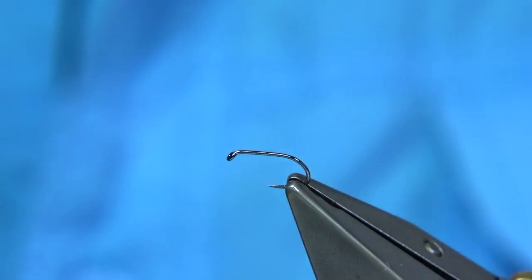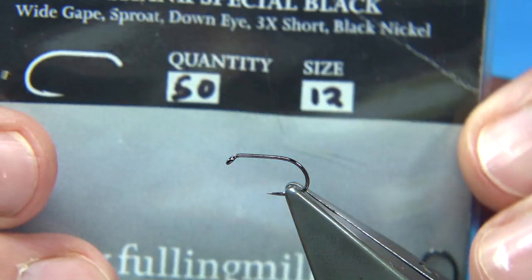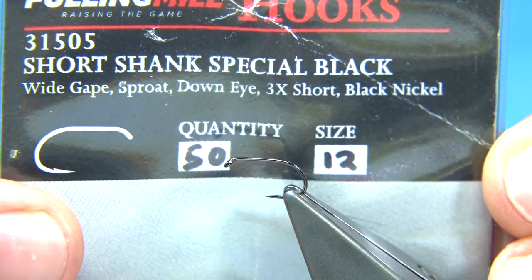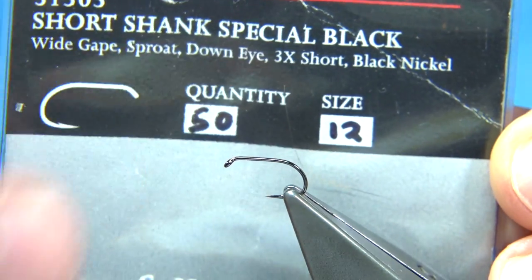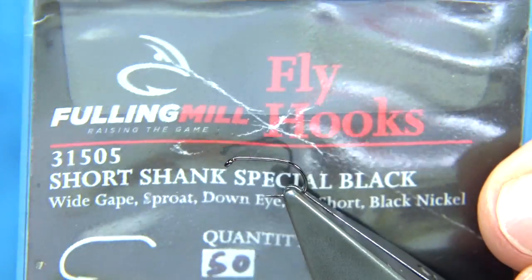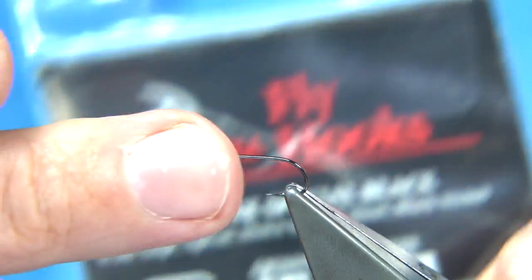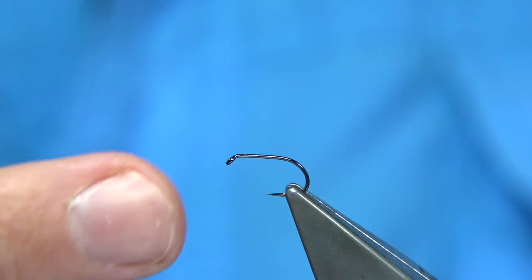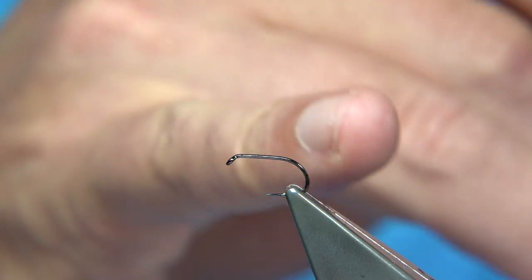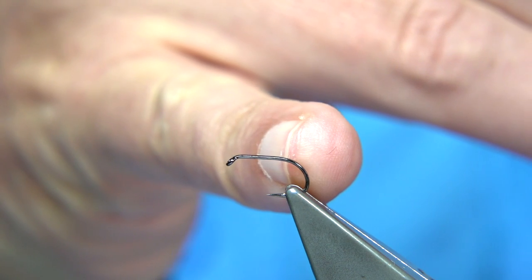Now I've got the hook in the vice and we're ready to go. The hook I'm using is the short shank special, size 12. As you can see, it's a medium wire hook by Fulling Mill. There is the barbless version as well as the bronze version. The shank is equivalent to a size 14 and the gape's equivalent to size 12.